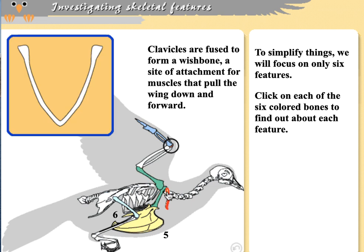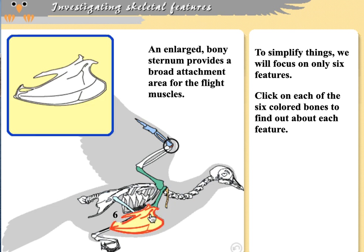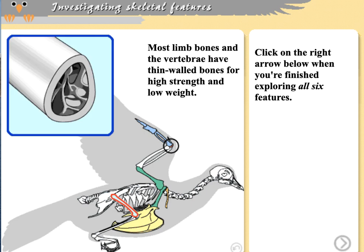Clavicles — the collarbones — are fused into a wishbone in birds, which serves as a site of muscle attachment for flight muscles. The sternum is enlarged in birds to provide a large area for muscle attachment — bones with enlarged flat surfaces or ridges indicate more musculature attached to them. Finally, bird bones are hollow, thin-walled, and air-filled, which allows the bones to be strong but also light — a key characteristic that allows birds to fly.